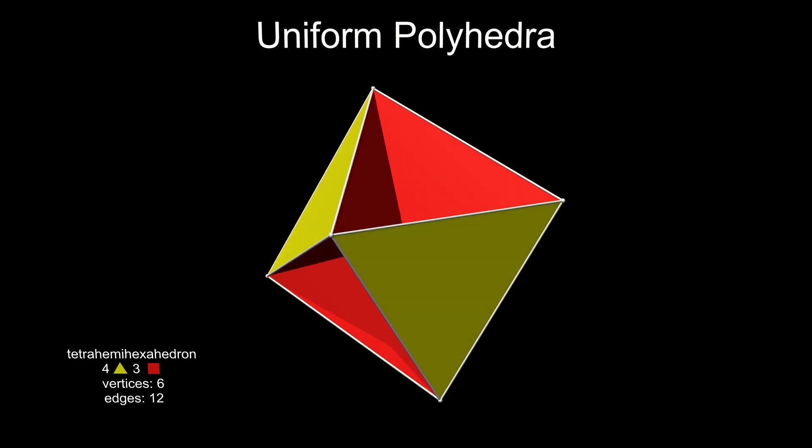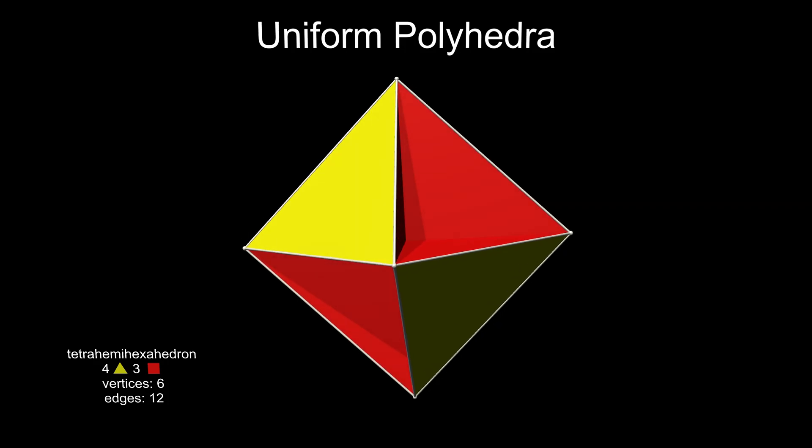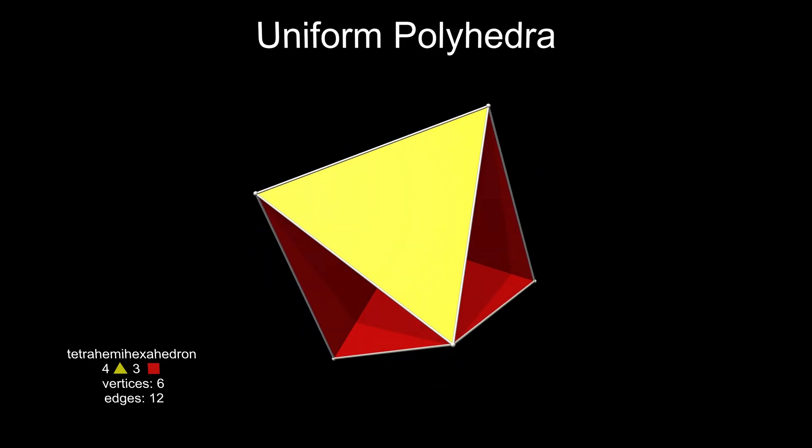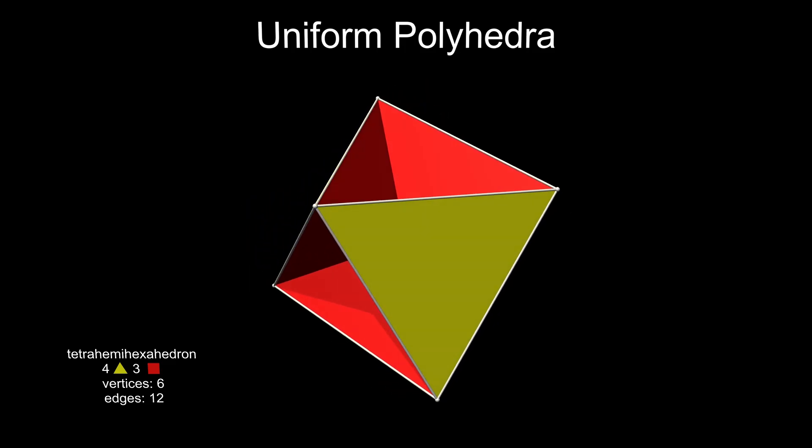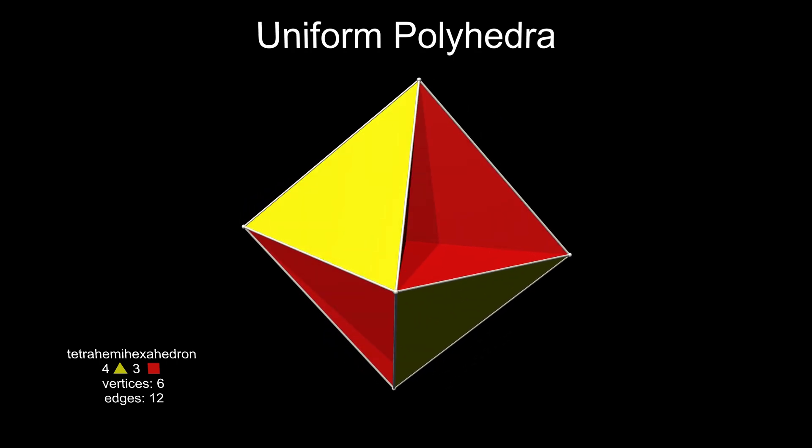Some faces pass through the centre. This is what the hemi in its name means. It's the only concave uniform polyhedron with tetrahedral symmetry. Finally, it has only one surface, like a Möbius strip. Its Euler characteristic is one, unique among uniform polyhedra.